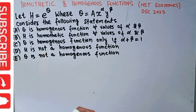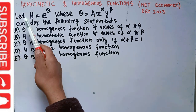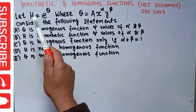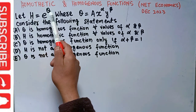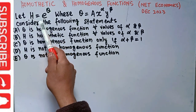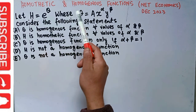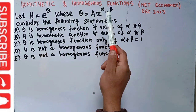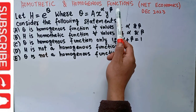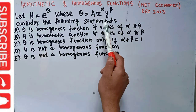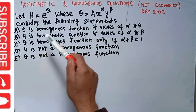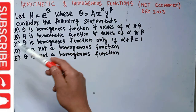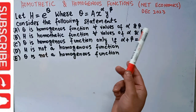Let us solve a question on homothetic and homogeneous functions. The question is: let h = e^q, where e is the exponential function, q = a * x^α * y^β. Consider the following statements and we need to find out which statements are correct.